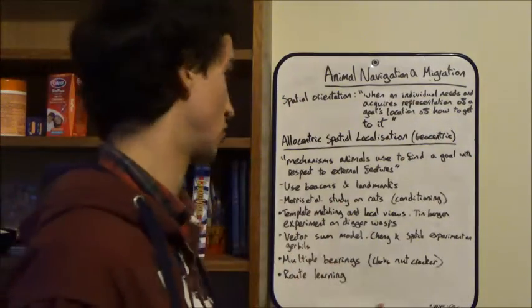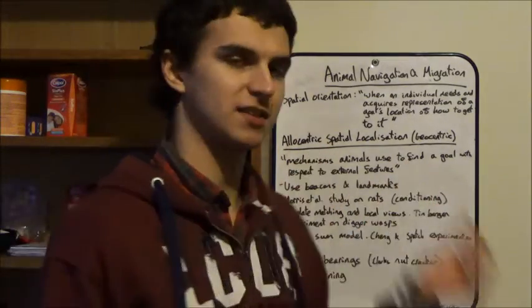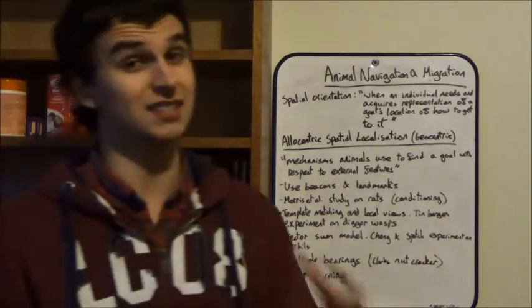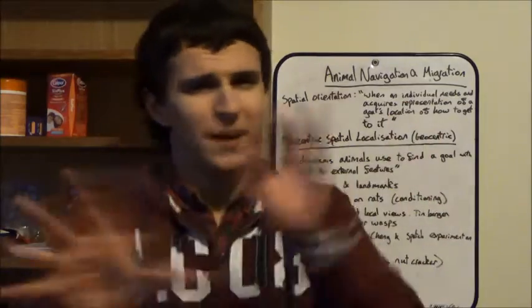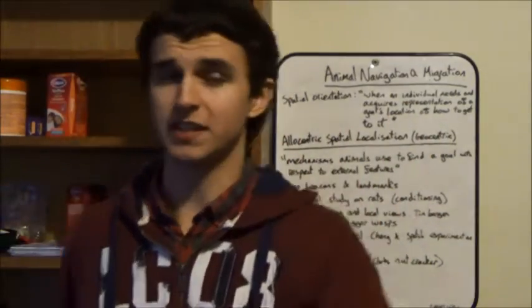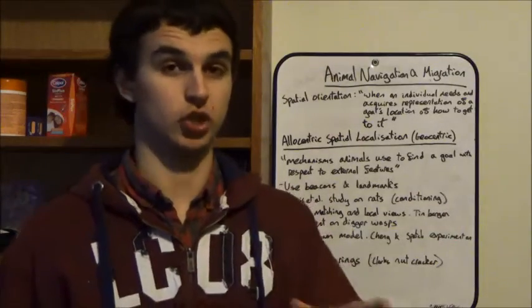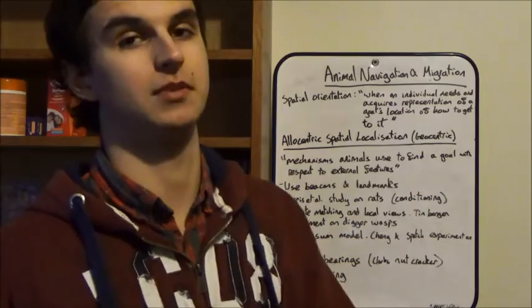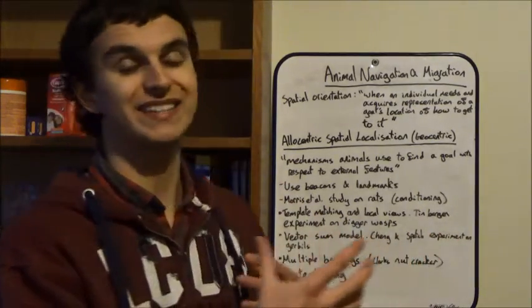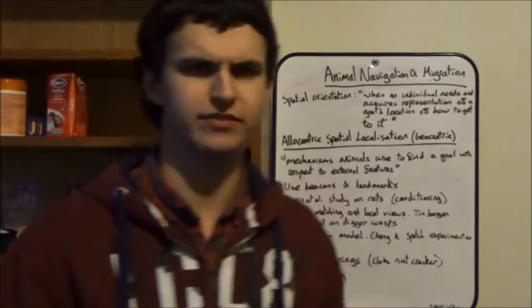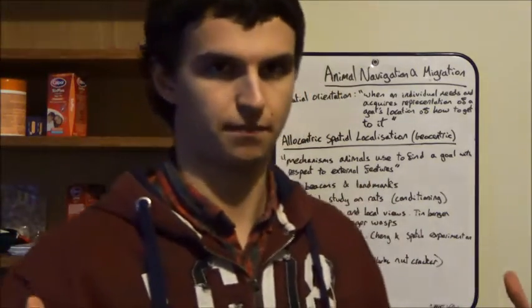So, the other type of localization, and probably the most common type, is allocentric spatial localization, also known as geocentric spatial localization. And this is the mechanisms animals use to find a goal with respect to external features. And these external features are usually in the form of beacons and landmarks. Now, I bet you've wondered all your life, is there a difference between a beacon and a landmark? You have, haven't you? Well, a beacon is a spatial cue, so it gives an indication on where that animal is in space. Whereas, a landmark is a distance cue, right? So, it gives the animal an indication on how far away you are from a given place. Okay?